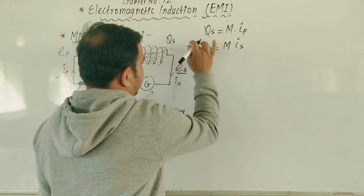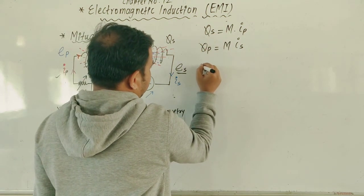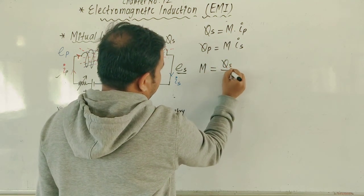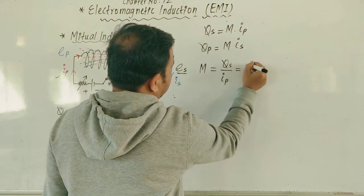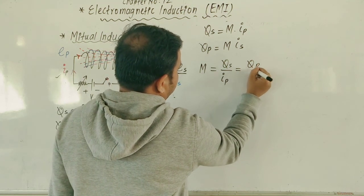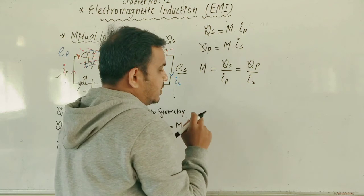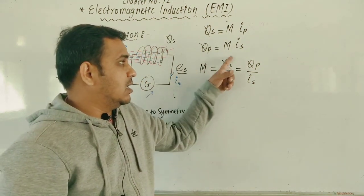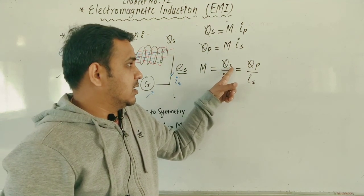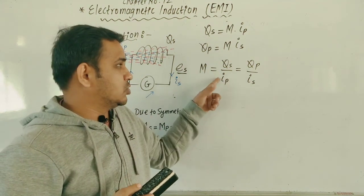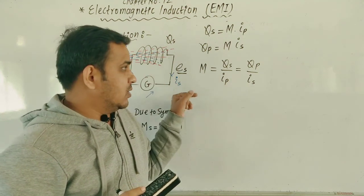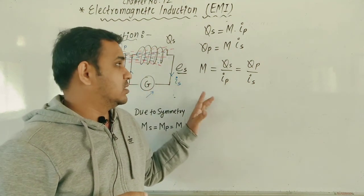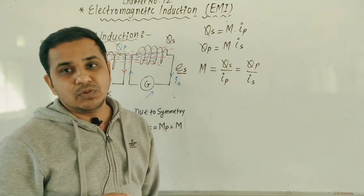If you calculate M by solving these two equations, you get: M = Phi_S / I_P = Phi_P / I_S. So mutual inductance can be defined as the flux in the secondary coil per unit current in the primary, or equivalently, the flux linked with the primary coil per unit current in the secondary coil — this is another way to define mutual inductance.